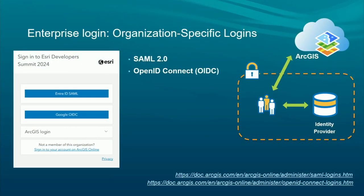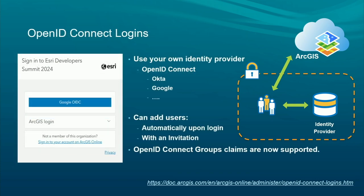Next, we have organization-specific logins. We'll talk about OpenID Connect first, followed by SAML. OpenID Connect is built on top of OAuth 2.0 and is a means to authenticate — it is JSON-based. Some examples are OAuth and Google. As an administrator, if it is configured on your org, you can invite users automatically or send an invitation for them to join. Recently, we started supporting group claims, bringing us at parity with the enterprise groups we had supported for SAML.